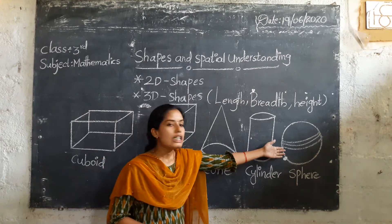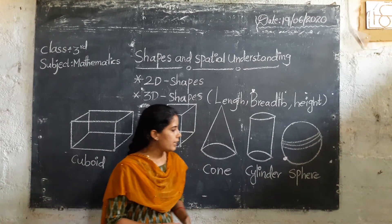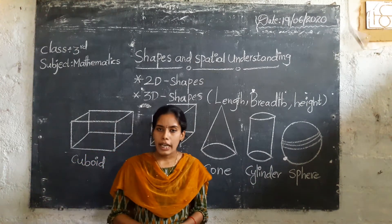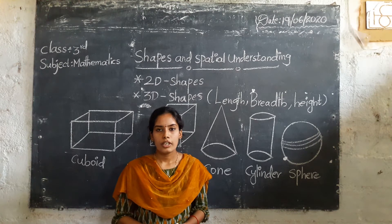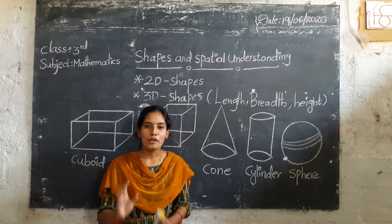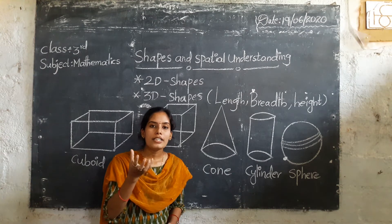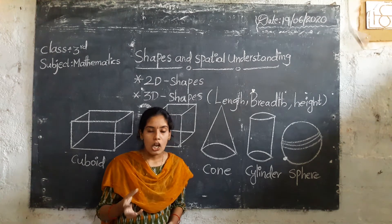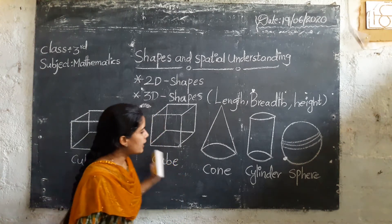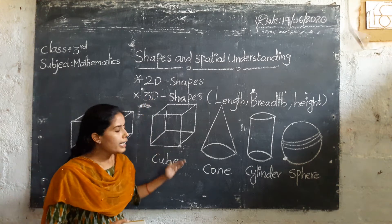And the last one is sphere. Where we are using sphere — where we are observing it in daily life? Do you like cricket? How to play cricket? By using a ball. The ball is in the shape of a sphere. These are the examples of 3D shapes.